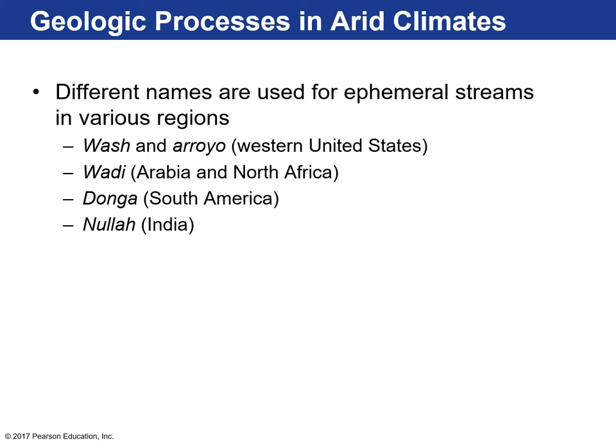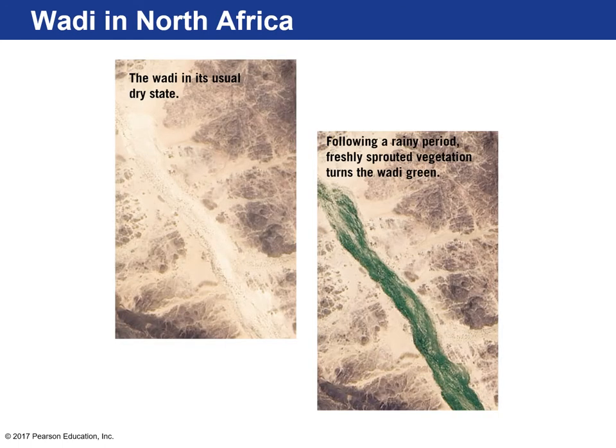There are different names for ephemeral streams around the world. In the western United States, we have a wash or arroyo. In Arabian North Africa it's called a wadi. In South America it's a quebrada, and in India a nala. Here's a wadi in its dry state — a satellite image of a wadi in Niger, North Africa. Following a period of rain, freshly sprouted vegetation appears and the wadi turns green.